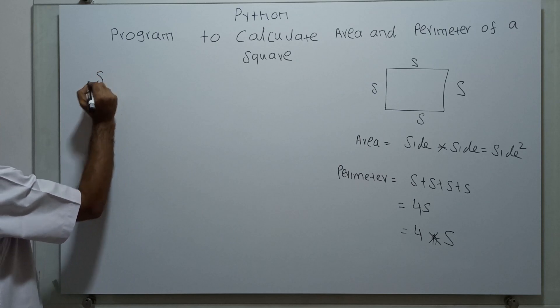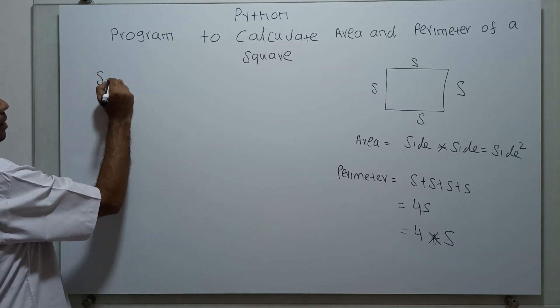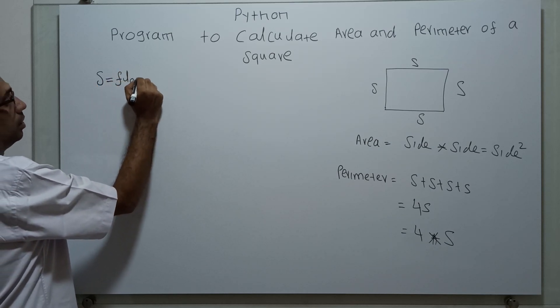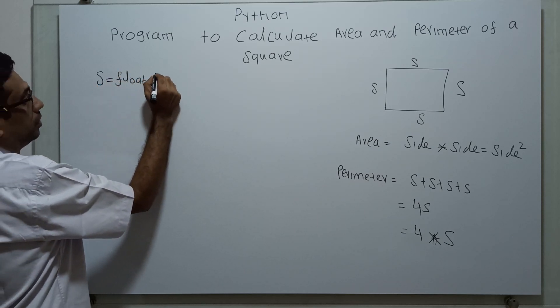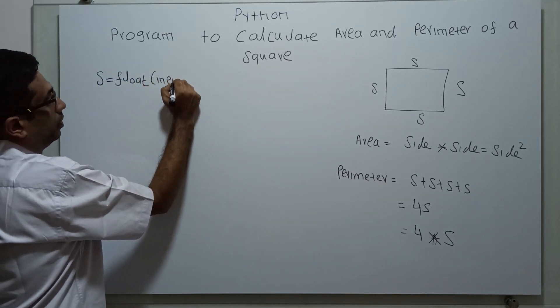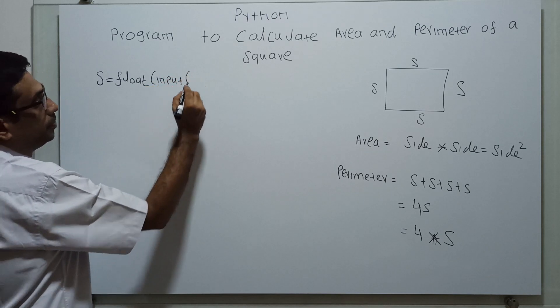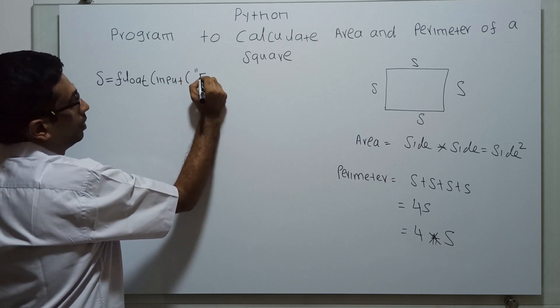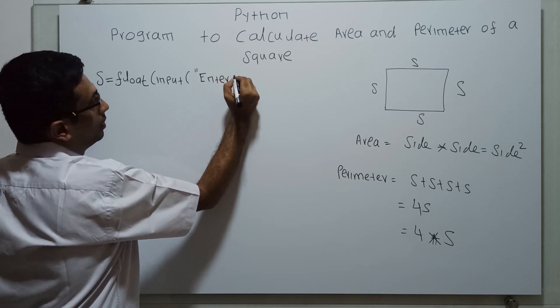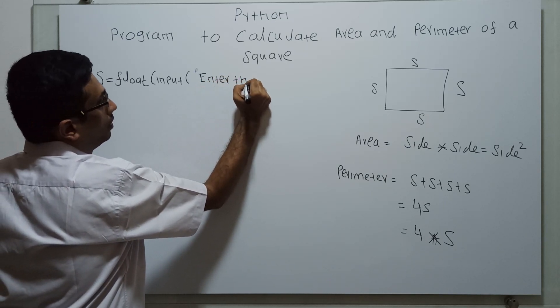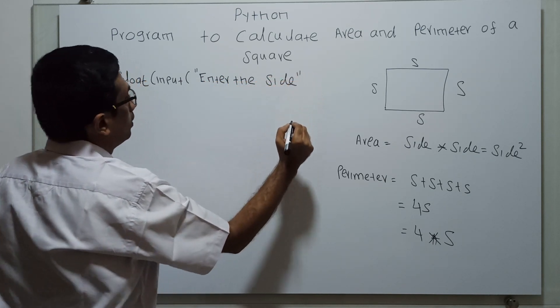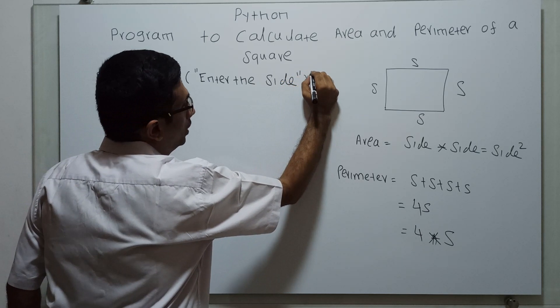The variable S for side. S equals float of input of enter the side. I am closing the input, I am closing the float.